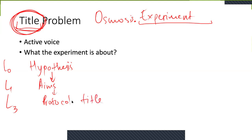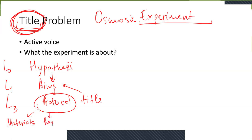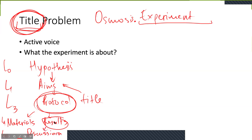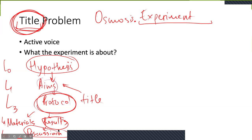Dependent on the protocol is your materials section and also your results, because they explain what happened when we used this protocol — this is level four. Finally, level five is discussion, which is purely dependent on the results. Of course, because the hypothesis is the top level, the discussion is also dependent on the hypothesis, but through the chain of aims, protocol, results, and then discussion.